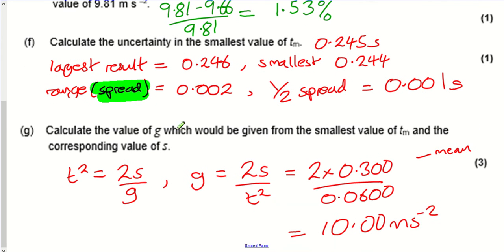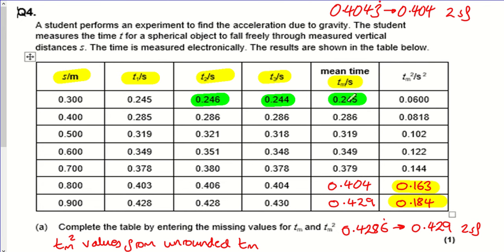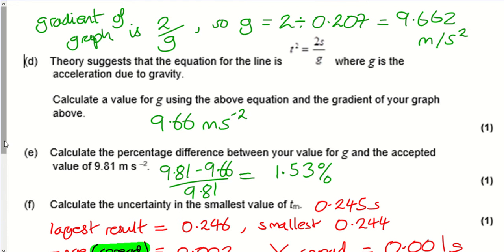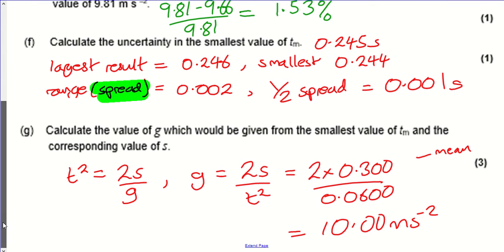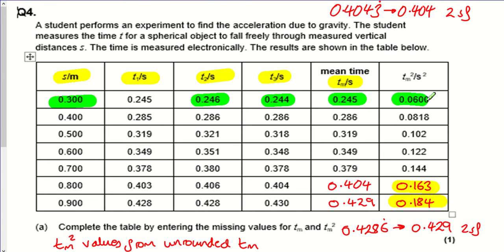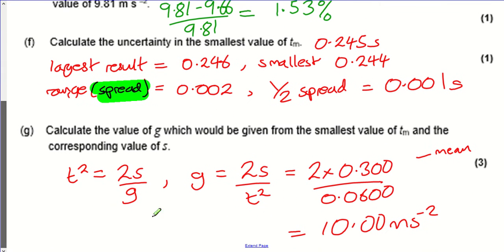Now calculate g using just that single data point rather than the gradient. The mean time of 0.245 s was at a height s = 0.3 m. Using g = 2s/t², that's g = (2 × 0.3) ÷ (0.245²) = 0.6 ÷ 0.060025 ≈ 10.0 m/s², which they accept as 10.0 or 10.00.